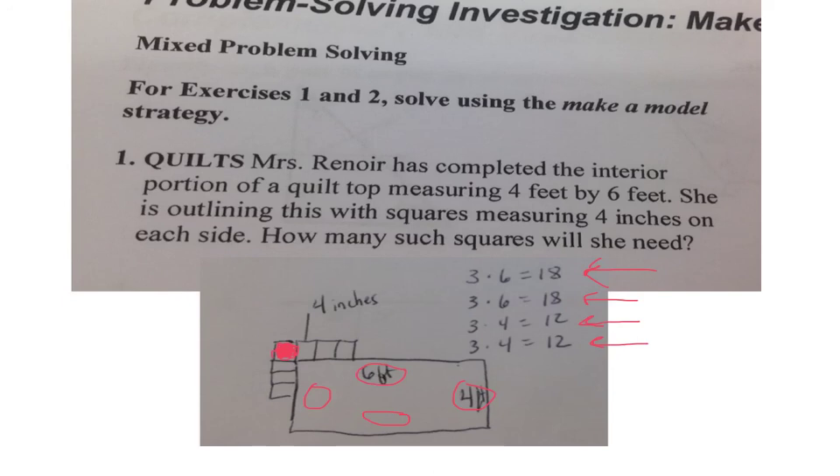So, we have a total of 60 squares to do all along the outside edge, plus four more squares to be able to do the corner pieces. So, Mrs. Renoir is going to need a total of 64 squares.